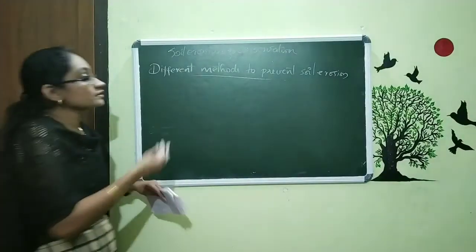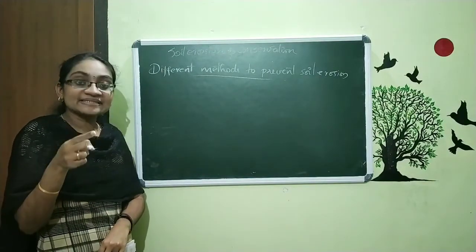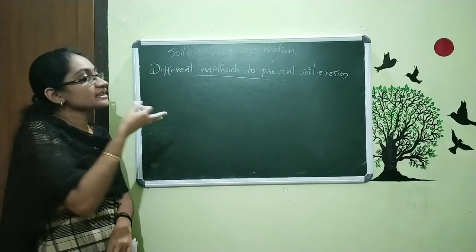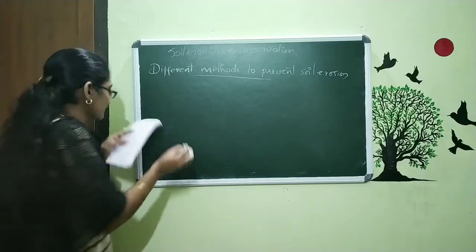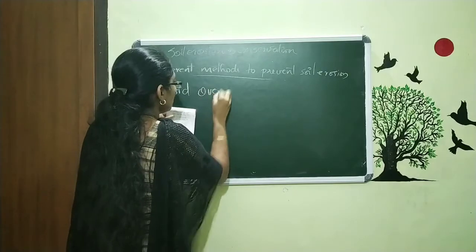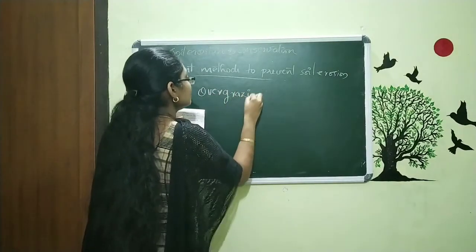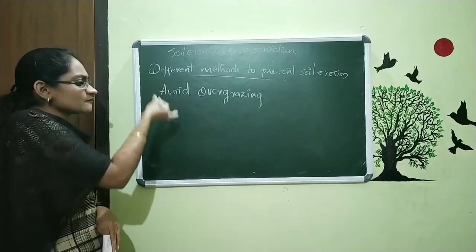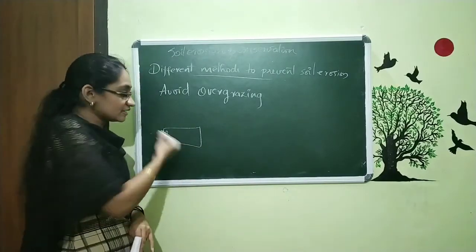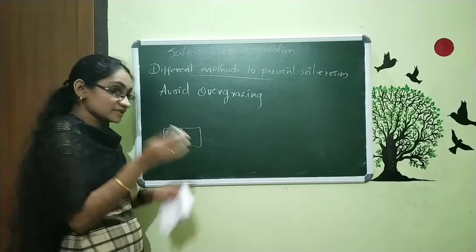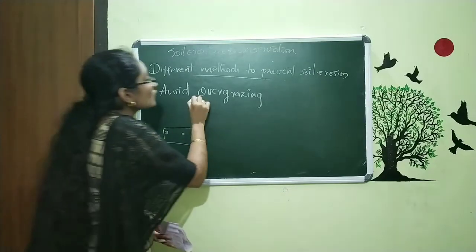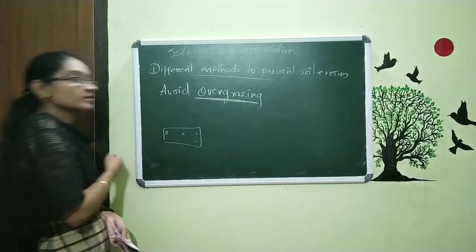The third method is to avoid overgrazing. Since overgrazing leads to soil erosion, when we reduce overgrazing, soil erosion is prevented. We should displace animals from one place to another — always keeping animals within the same region damages the soil by removing all plants. Just move the animals from one place to another and avoid overgrazing.